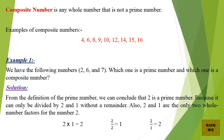Solution: From the definition of the prime number, we can conclude that 2 is a prime number, because it can only be divided by 2 and 1 without a remainder. Also, 2 and 1 are the only two whole number factors for the number 2: 2 × 1 = 2, 2 ÷ 2 = 1, and 2 ÷ 1 = 2.